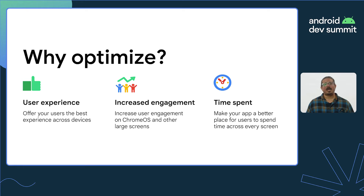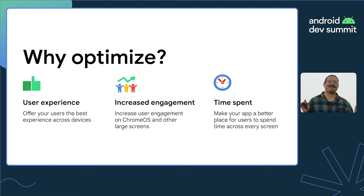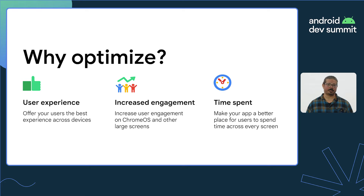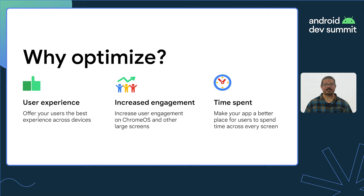Before we get started, I'd like you to take a few seconds to think of an app that provides a really great experience when you use it on both a phone and a Chromebook. When I imagine this, I envision different experiences between small and large screens, and many of our users will expect as much. Because our Android apps can be run in both situations, let's make sure that we provide a great experience on both phones and Chrome OS.